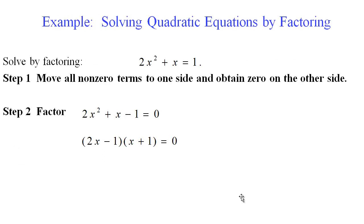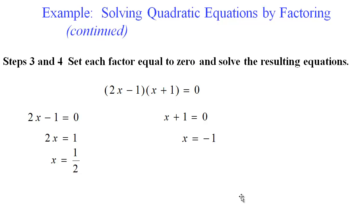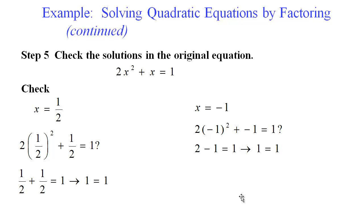Here is an example: 2x squared plus x equals 1. It is not equal to zero, so we move the 1 over. Now we try to factor — and if you can't, the quadratic formula is always available. Once factored, we set each factor equal to zero and get the two solutions one-half and negative one. We plug both back into the original to verify. Quadratics in general form will almost always check out; it is non-standard forms where you need to be more careful.